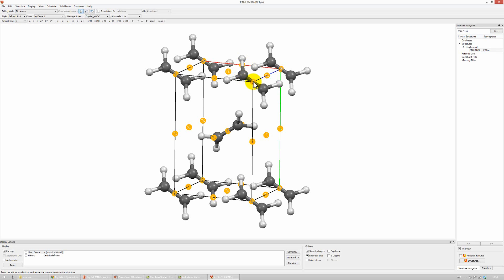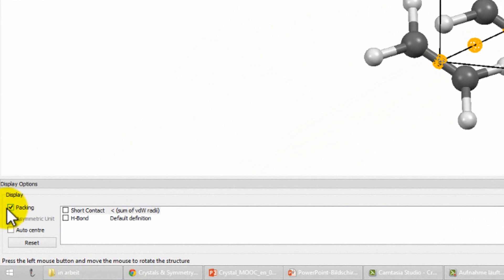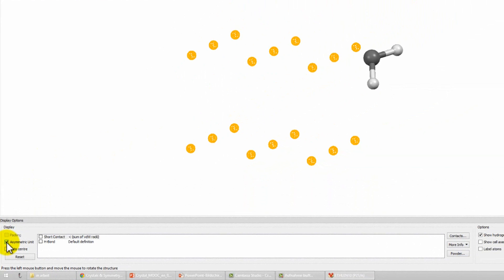Now, what does this mean with respect to our asymmetric unit? Exactly, the asymmetric unit comprises only a half of this ethylene molecule, because the other half is generated by this inversion center. And as Mercury also allows us to show only the asymmetric unit, instead of one whole formula unit or the whole unit cell, we can see if we are right. For that, we first have to uncheck the packing option, here at the bottom left, and then we can check this box, the asymmetric unit. And here we see, indeed, it's only the half of our molecule.